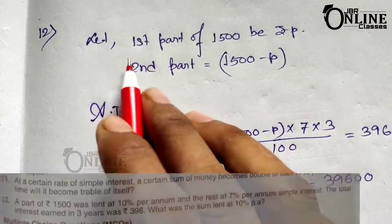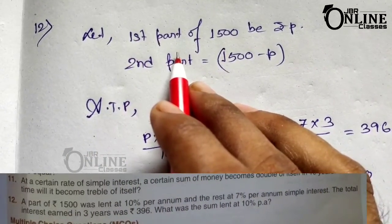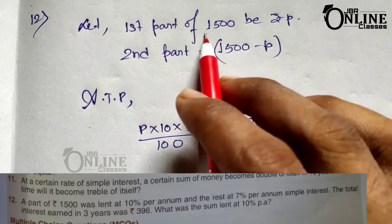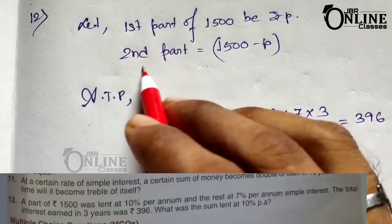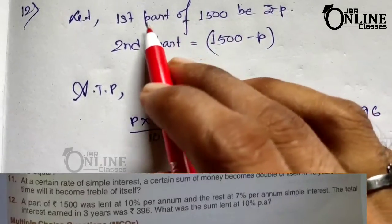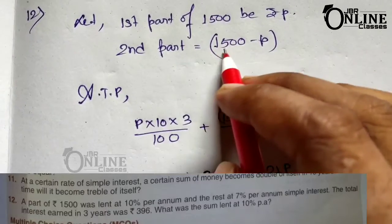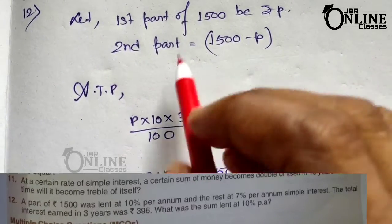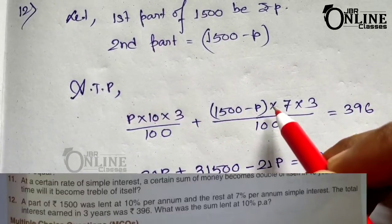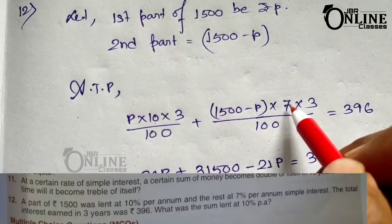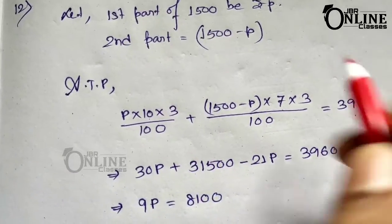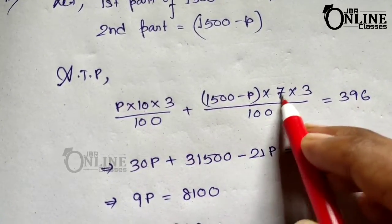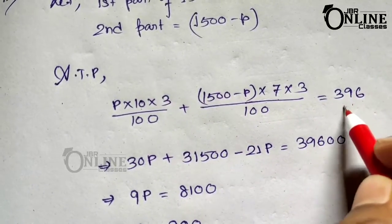Sum number 12: A part of 1500 was lent at 10% per annum and the rest at 7% per annum simple interest. Let the first part be P, so the second part equals 1500 minus P. The time is 3 years in both cases. Total simple interest equals 396. So SI of first part plus SI of second part: P into 10 into 3 by 100 plus (1500 minus P) into 7 into 3 by 100 equals 396.